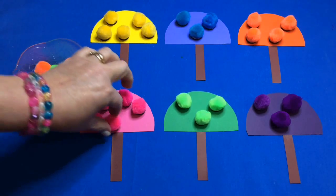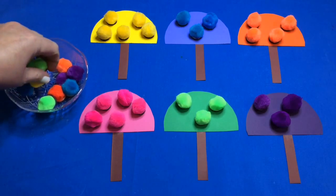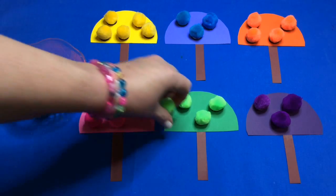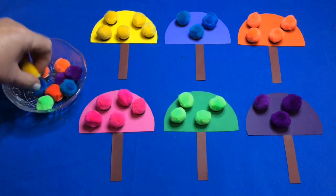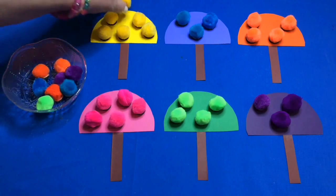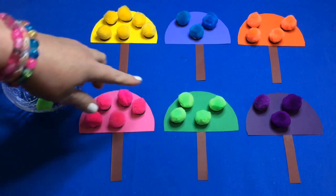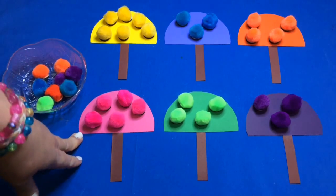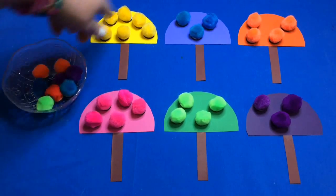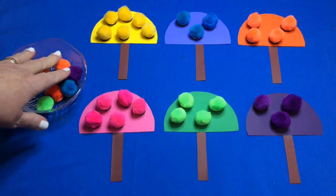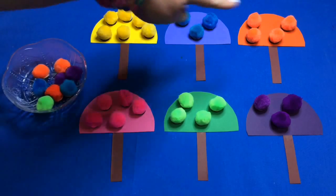I have pretty much the same number of pom-poms for each color in this video, but something you may want to do is not put the same number for each umbrella. When they're all done, have the children count the number on each umbrella and find which one has the most and which has the least.